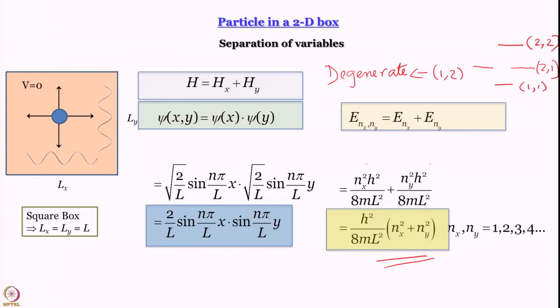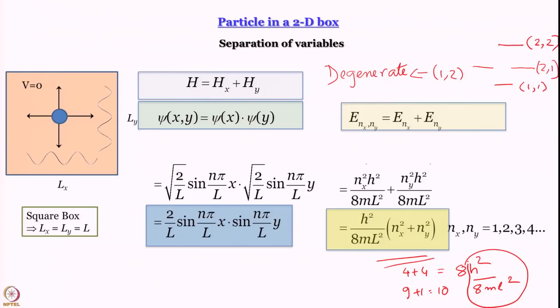Continuing to work out energy levels: for (2,2) energy is proportional to 4+4=8; for (3,1) it is 9+1=10, so the next level after the degenerate (1,2)/(2,1) pair is (2,2). We can work out the full energy level diagram of a particle in a 2D box. What have we learned from the square box discussion? Separation of variables is very important, and we have encountered degenerate states.